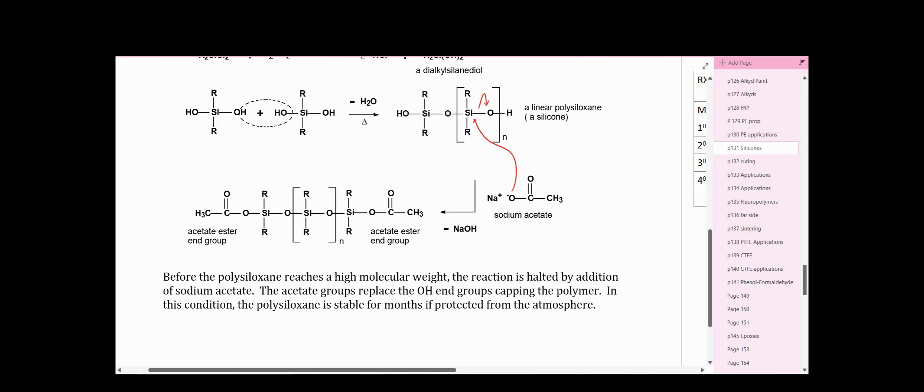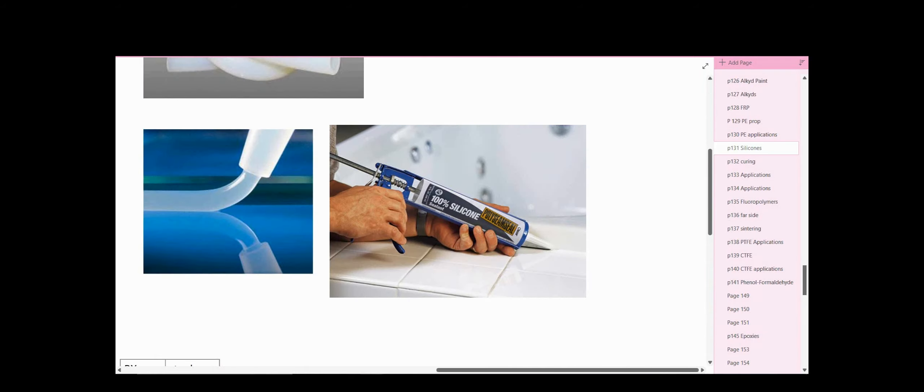Here we see the low molecular weight polymer with the acetate ester end groups on it, and it's packaged in this fashion. So before polysiloxane reaches high molecular weight, the reaction is halted by the addition of sodium acetate. Then the acetate groups replace the hydroxyl group, that's our cap, and cap the end of the polymer. In this condition, polysiloxane is stable for months if protected from the atmosphere in a tube. It's stable in the tube for quite a number of months after you purchase it, as long as you don't open it to let the air in.